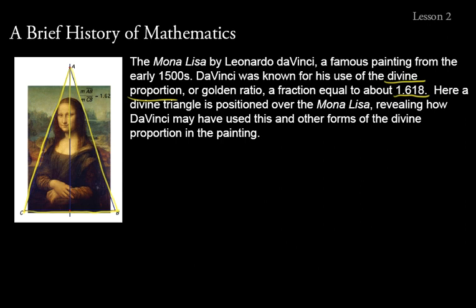Da Vinci and other Christians used things like the divine proportion in their work because they believed God used it in his work. What other mathematical patterns remain to be discovered? Maybe you'll discover a new pattern or a new use of an old one like the divine proportion. Think about it this way: if you want to paint like Leonardo da Vinci, you'd study his works. Likewise, if you want to paint like God, study his works — including what he said in his word and what he made in creation.